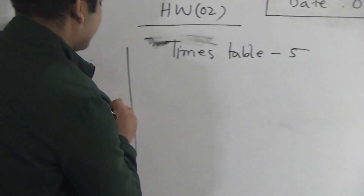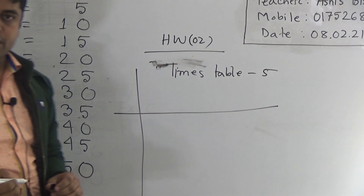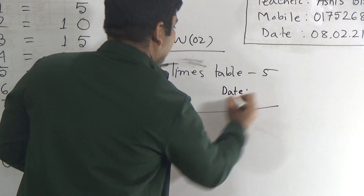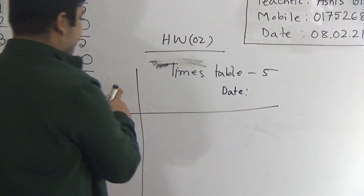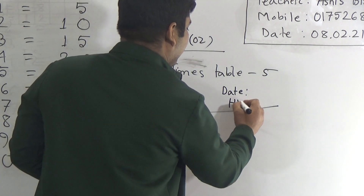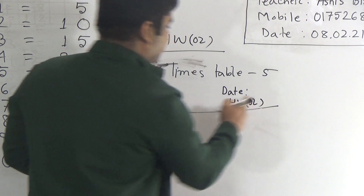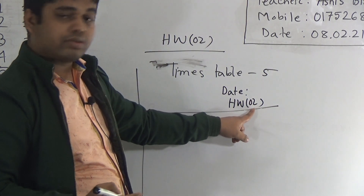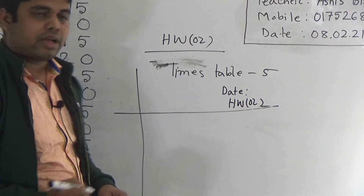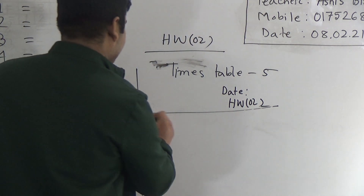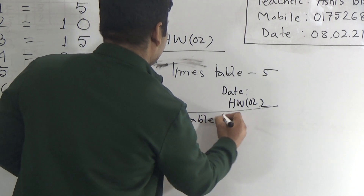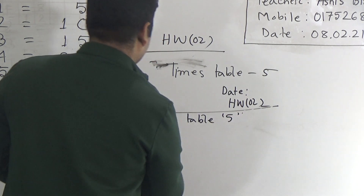Now I shall show you how to write times table 5 in your SW copy. Suppose this is your SW copy. Here you write the date. After that, you write here SW number — it is very essential. If you do not write SW 2, then it is wrong. So you must write SW number. After that, here you write the heading, that means: Times table 5. Then you start from here.